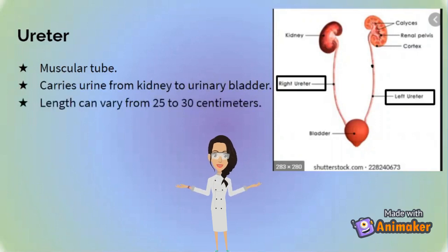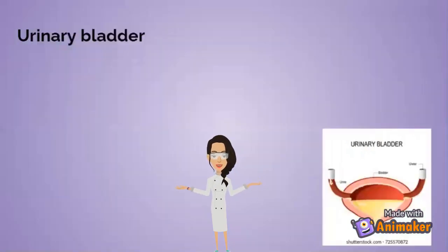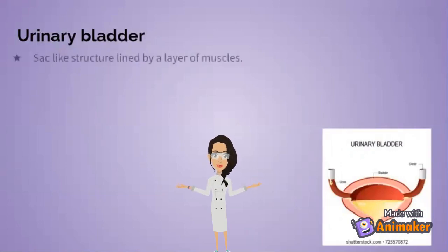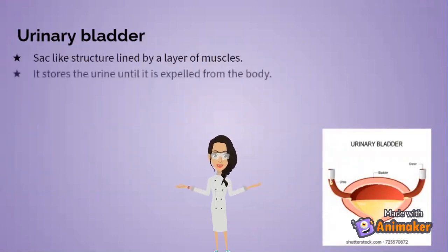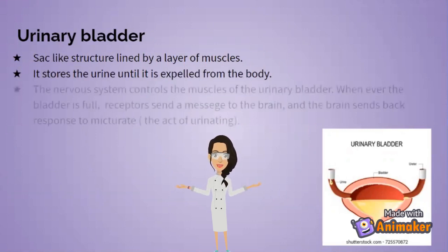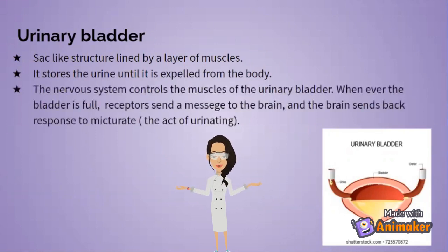Now let's learn about the urinary bladder. The urinary bladder is a sac-like structure lined by a layer of muscles. It stores the urine until it is expelled from the body. The nervous system controls the muscles of the urinary bladder. Whenever the bladder is full, receptors send messages to the brain and the brain sends back the response to mictuate — the act of urinating.